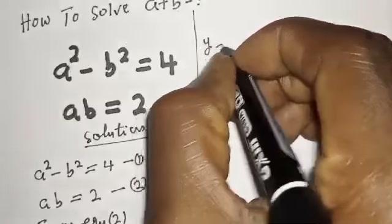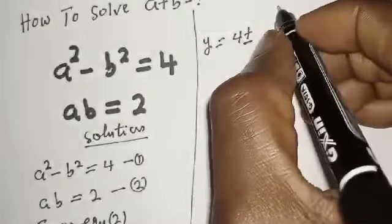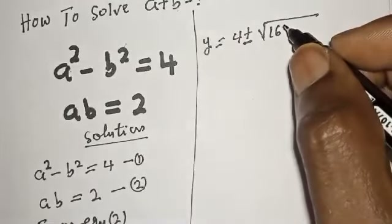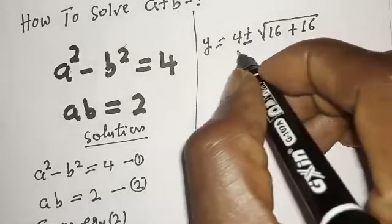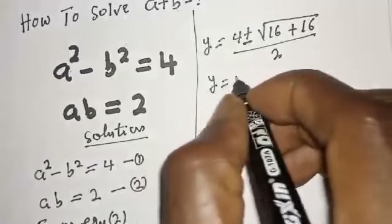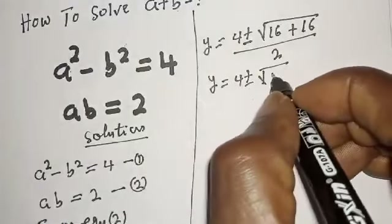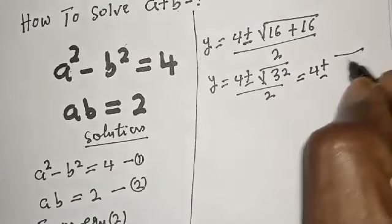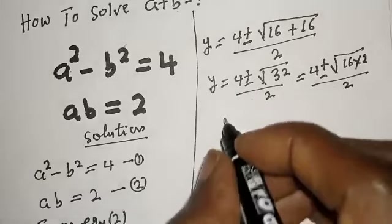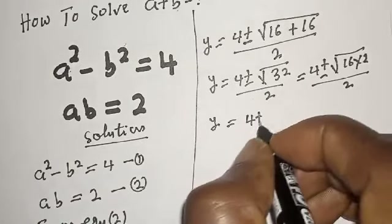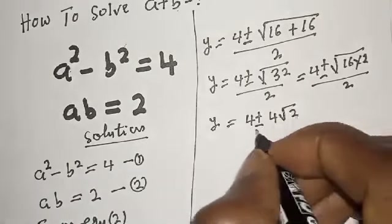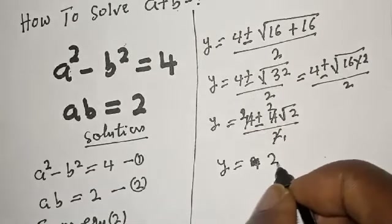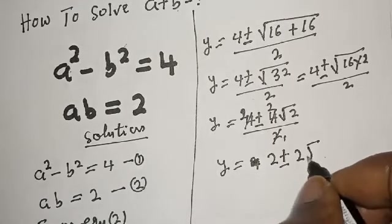We have y is equal to 4 plus or minus square root of: minus 4 squared is 16, then minus 4 times 1 times minus 4 is plus 16, over 2. So y is equal to 4 plus or minus square root of 32 over 2. Then y is equal to 4 plus or minus square root of 16 times 2 over 2. Then y is equal to 4 plus or minus 4 root 2, all over 2. Dividing through by 2, y is equal to 2 plus or minus 2 root 2.